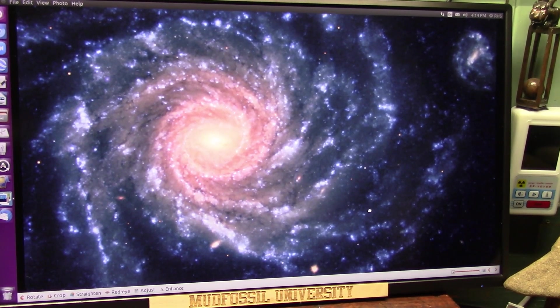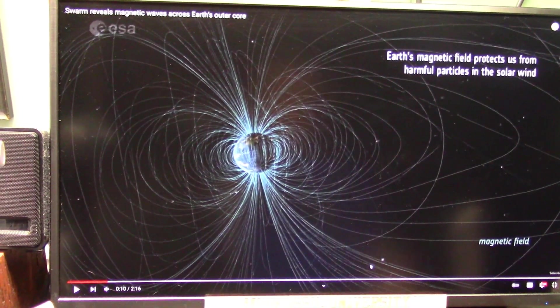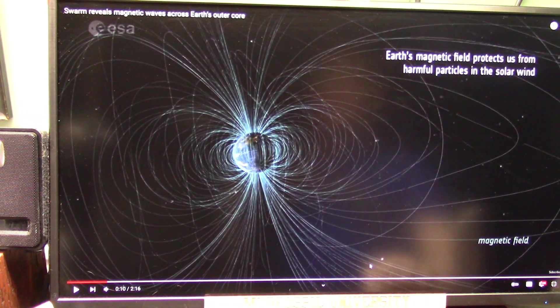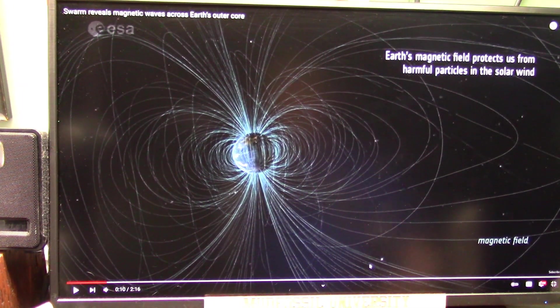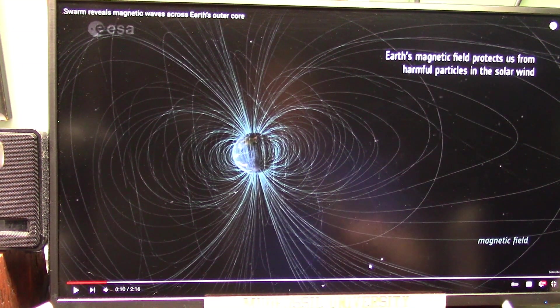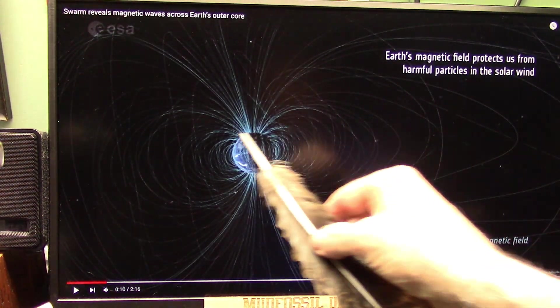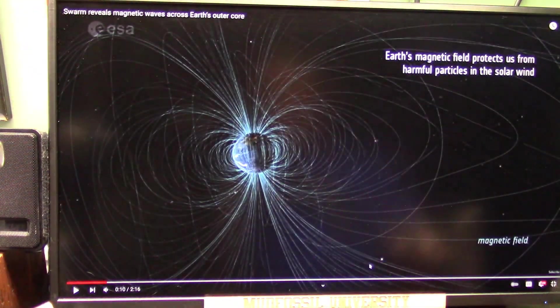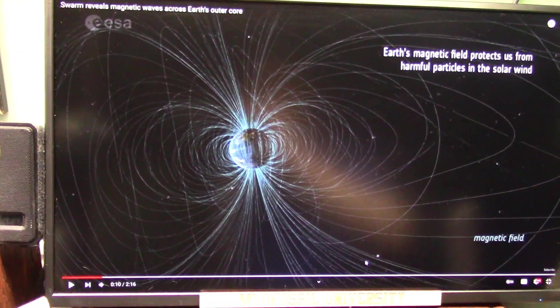You want to see the particles? I'm going to show them to you right now. So don't forget, this is European Space Agency and they say Earth's magnetic field protects us from harmful particles in the solar wind. I agree. But it also is the particles that we're scrubbing against creates our magnetic field.